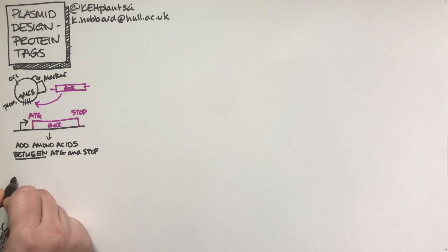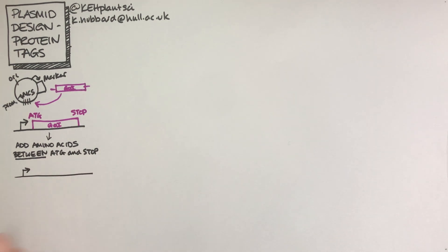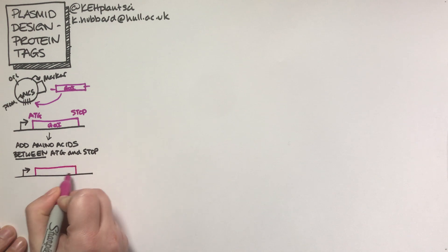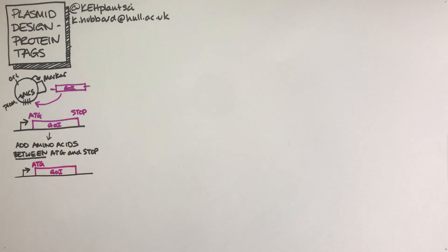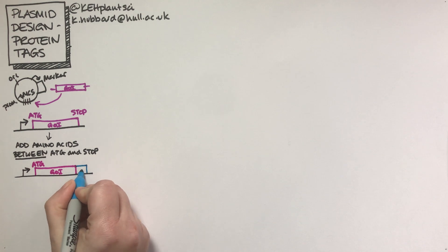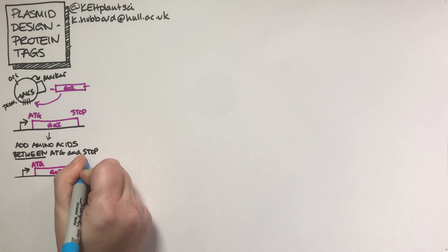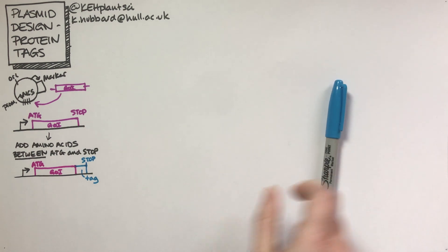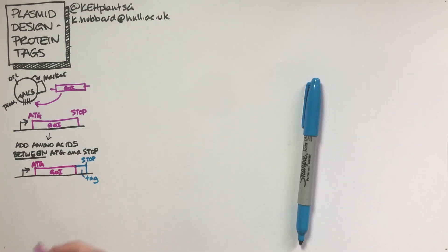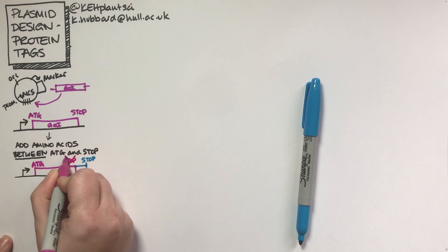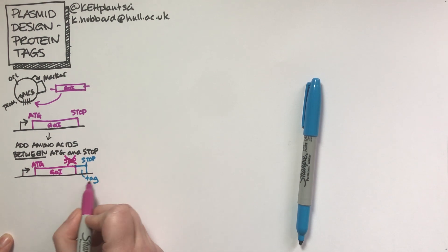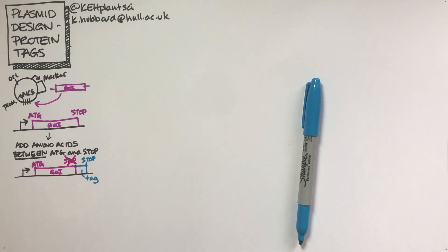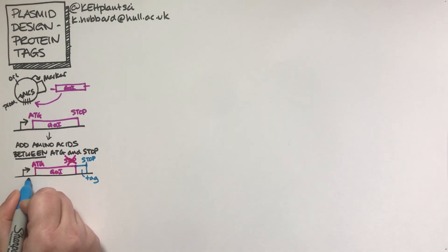For a C-terminal tag, you set up the construct with your promoter, your gene of interest with its ATG, and at the end you add a tag sequence. In this case the stop codon comes at the end of the tag. So we actually need to remove the stop codon that occurs naturally at the end of the gene — we're artificially extending the gene and putting the stop codon after the tag. That would be an example of a C-terminal tag.